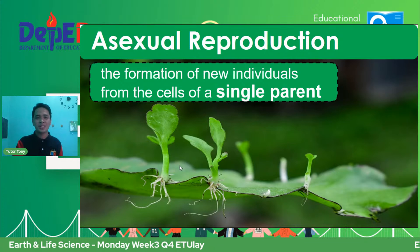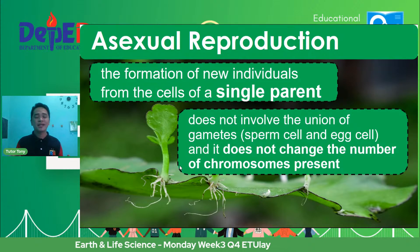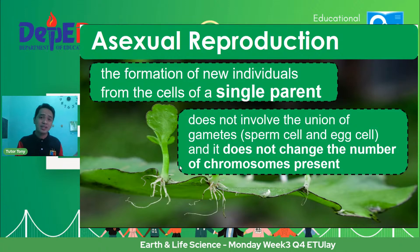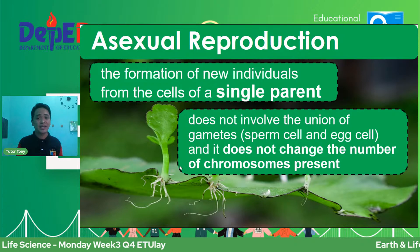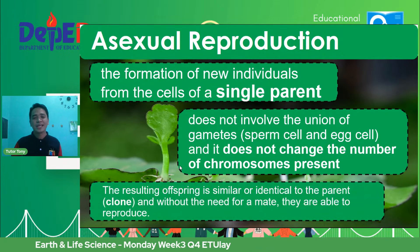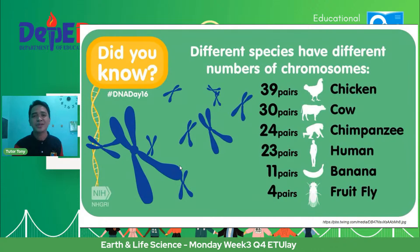Key points of asexual reproduction: it does not involve the union of gametes; it does not change the number of chromosomes present. Tayo mga humans, we have the diploid number — 46 chromosomes: 23 from the father and 23 from the mother. For asexual, walang ganoon — the organism keeps the same chromosome number. The resulting offspring is called a clone — an exact copy of the parent organism.